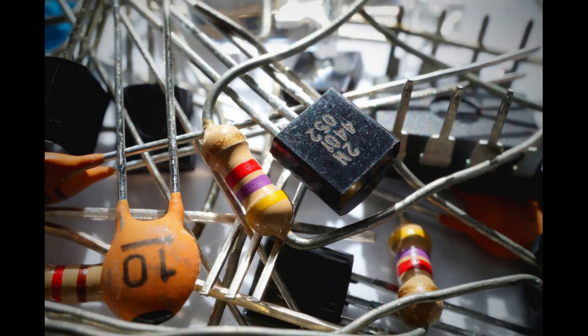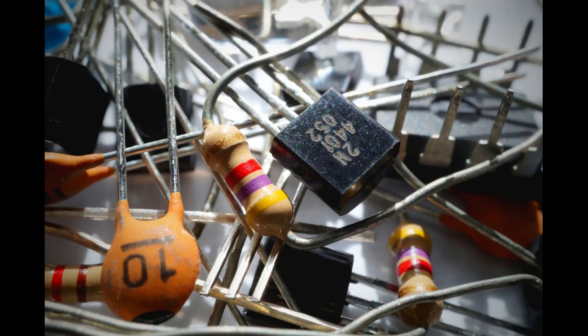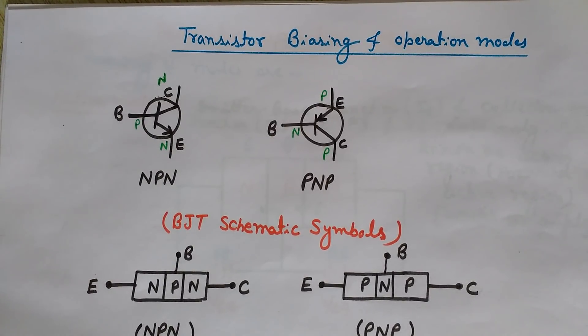I recommend you get the basic components of electronics either offline or online and start experimenting along with theory. If you like, you can get this awesome electronics kit from the link given in the description of this video. I have been using this kit and I'm highly satisfied and having fun. So now let's come to our topic: in this video we will see BJT transistor biasing and different operating modes.